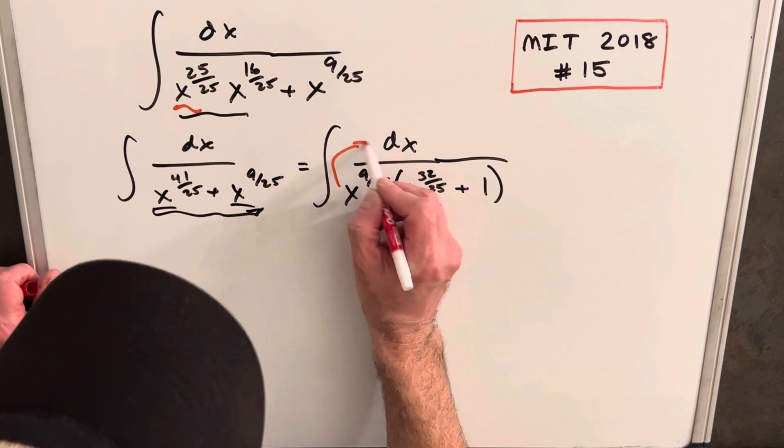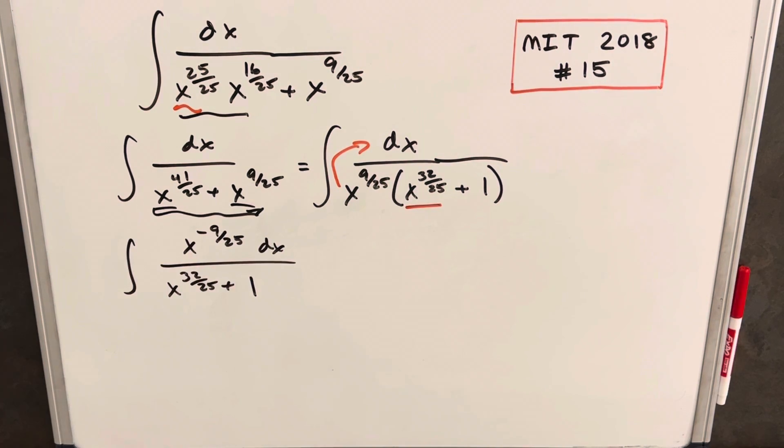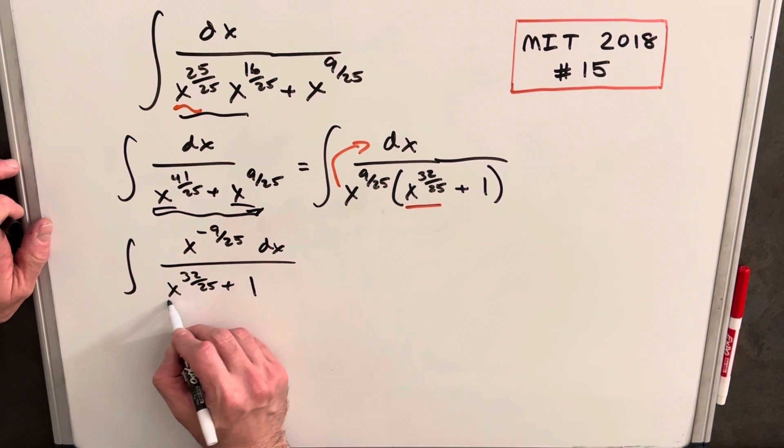From here we'd like a u-substitution to work. It's not clear exactly how. I think what's happening is with the big fraction it kind of makes it a little harder to see what's going on, so let's just try to make this whole thing u.